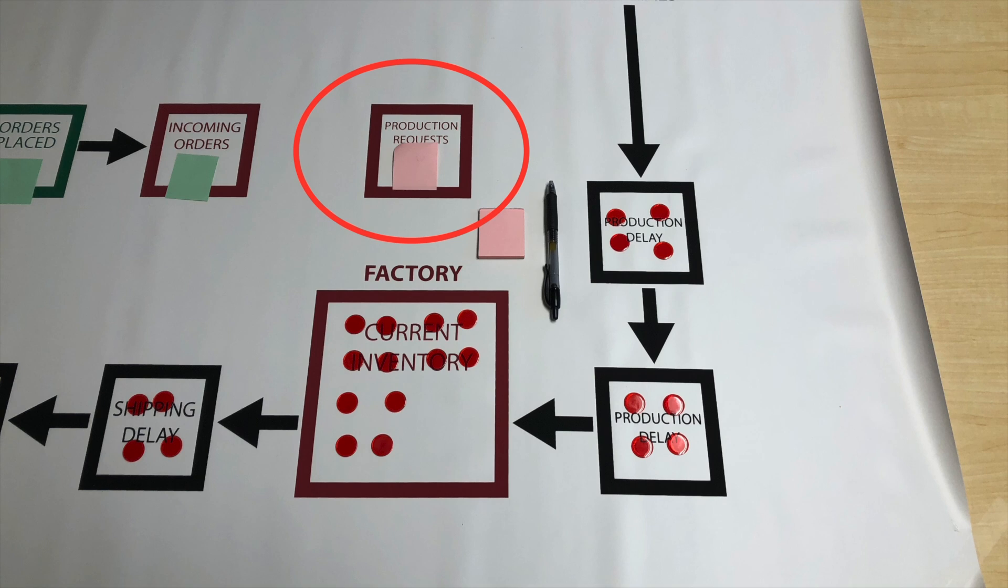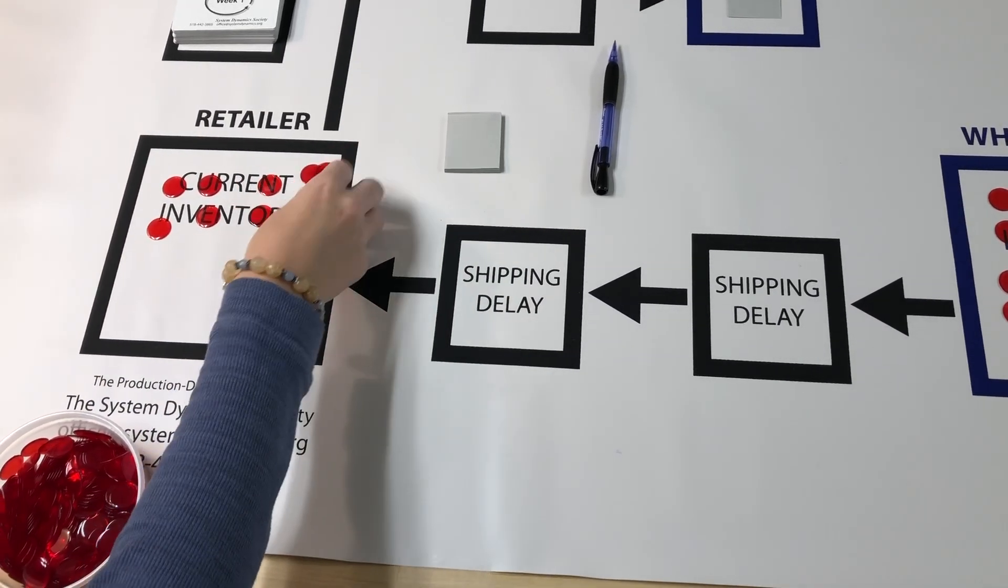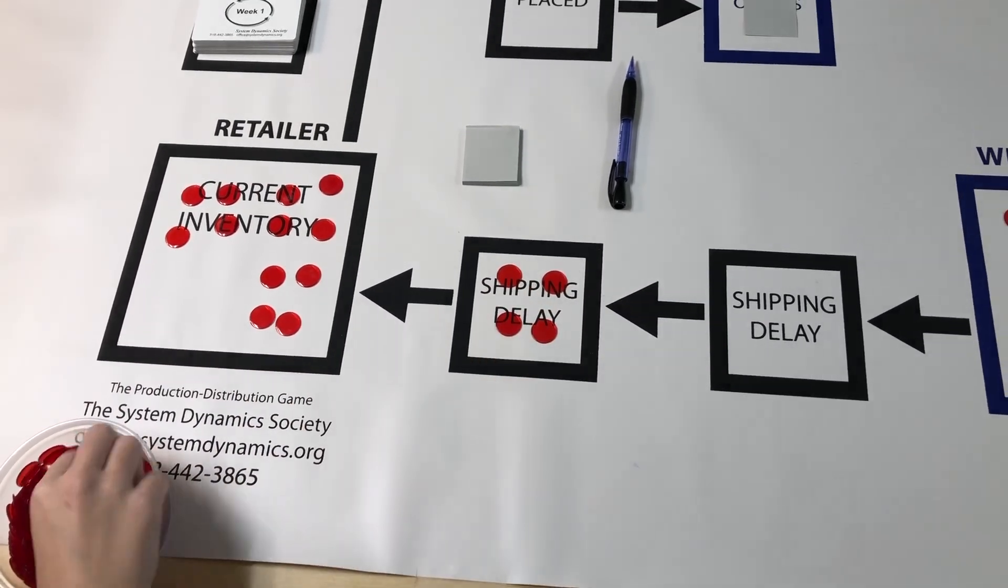The factory only needs one piece and places it in their production request box. Put 12 chips in the current inventory and 4 in each of the shipping delays.